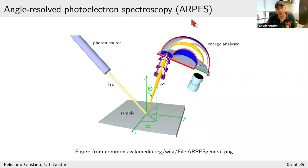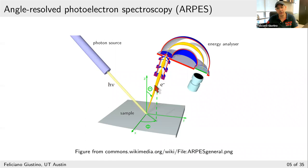The ARPES experiment is a very complex experiment but conceptually the idea is simple. It is based on the photoelectric effect: one shines light on a sample — a laser or synchrotron light source — and by the photoelectric effect, this light can extract electrons. These electrons are channeled into a hemispherical analyzer and collected on a detector. The power of these measurements is that the image collected on a CCD camera essentially tells you the band structure of the sample — it allows the most direct observation of band structures of materials.